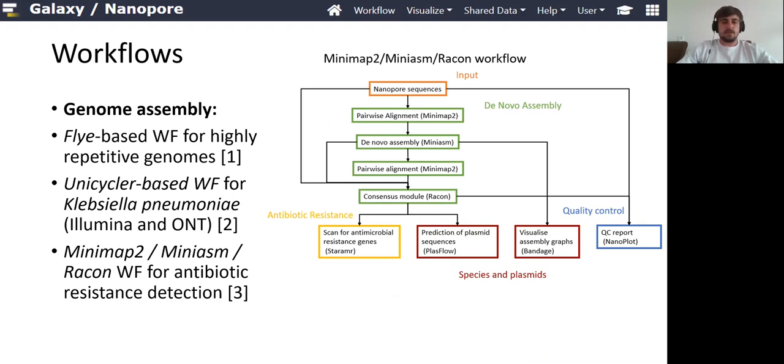You can use the short reads to accurately determine the SNPs, and you can use long-read sequences to more accurately determine the structure of the DNA. The last workflow that we created is a workflow using Minimap, Miniasm and Racon to assemble the plasmids or chromosomes. We added some tools to detect antibiotic resistance.